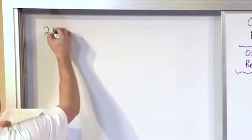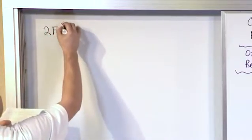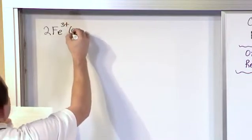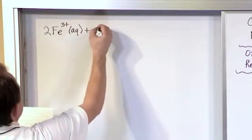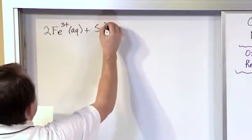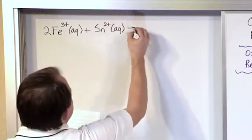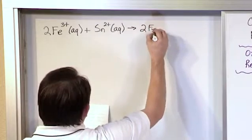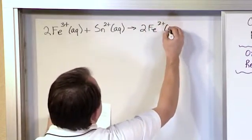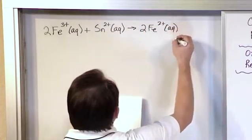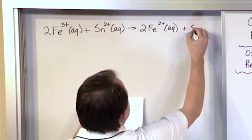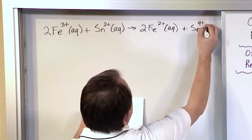What if we have 2 Fe³⁺ ions in aqueous solution, plus Sn²⁺ in aqueous solution, and that yields 2 Fe²⁺ ions in aqueous solution, plus Sn⁴⁺. These have a charge of plus 3, these have a charge of plus 2, and these guys have a charge of plus 4.